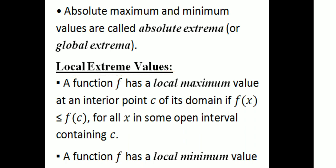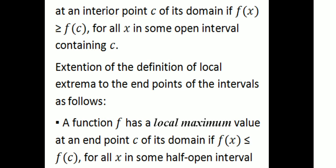A function f has a local maximum value at an interior point c of its domain if f(x) ≤ f(c) for all x in some open interval containing c. A function f has a local minimum value at an interior point c of its domain if f(x) ≥ f(c) for all x in some open interval containing c.